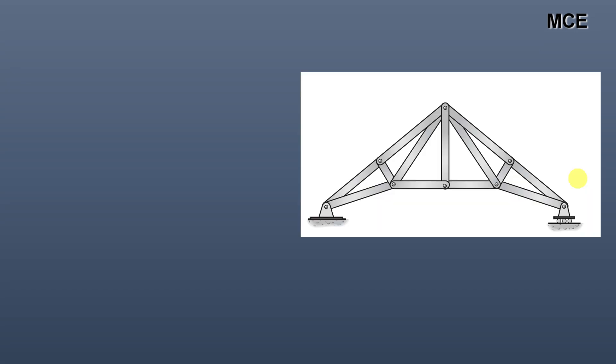The internal indeterminacy equals total static indeterminacy minus external static indeterminacy, which is 1 − 1 = 0. For truss three, this truss has a total of 13 members, 3 reactions, and 8 joints.